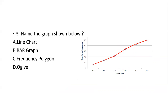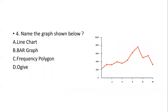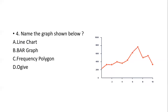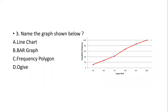Now we'll compare question number three and four. Name the graph shown below — options: line chart, bar graph, frequency polygon, and ogive. Please look carefully at both images. The options are the same for both questions, just the images differ. This is question three and this is question four — now let's use our mnemonic to approach these.